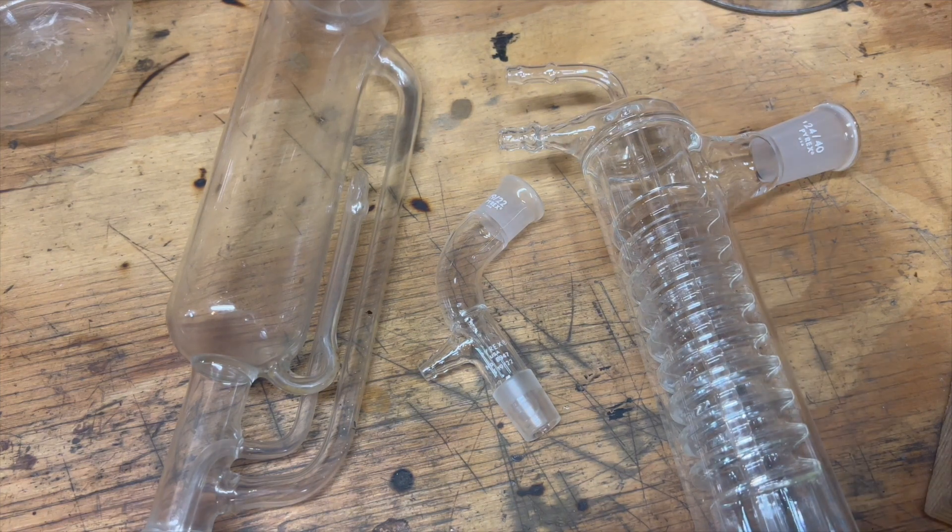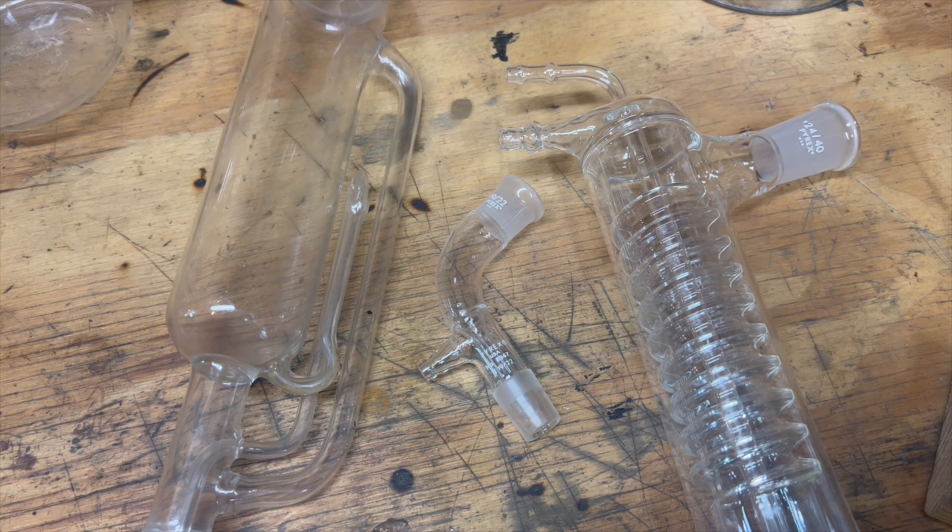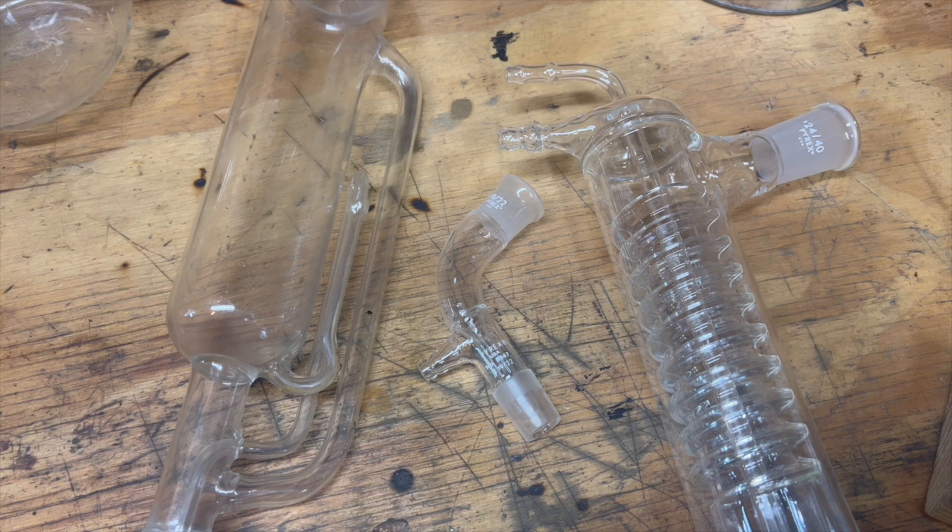Being able to bend glass tubing is crucial to making a wide variety of glass apparatuses. A few examples are soxhlet extractors, condensers, and distillation heads. All these apparatuses find common use in labs around the world, and being able to make and repair these is a crucial skill that is very important, which all begins with being able to bend tubing.